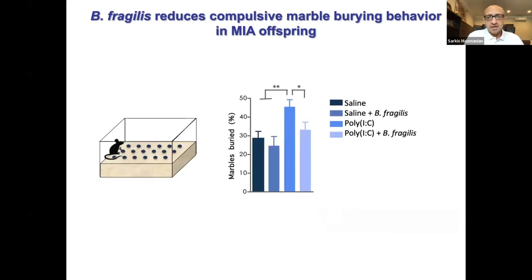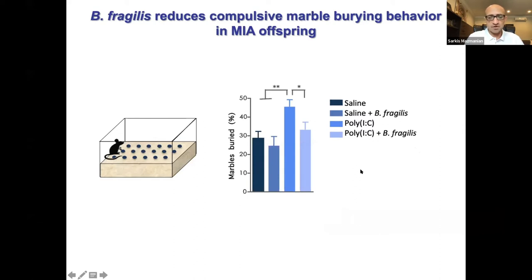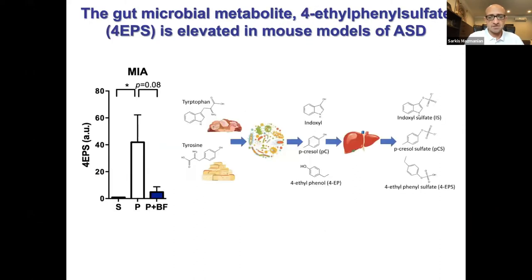The same improvement was seen with repetitive behavior in the marble burying test, which measures repetitive behavior and anxiety. Animals that are offspring of poly-IC injected mice bury more marbles in a given amount of time relative to control animals. This repetitive stereotyped behavior is improved with Bacteroides fragilis treatment, which, as mentioned, also improves the intestinal barrier.